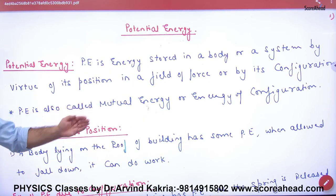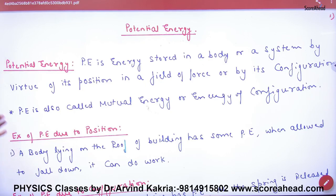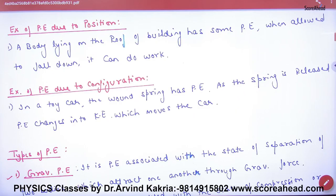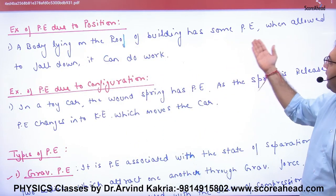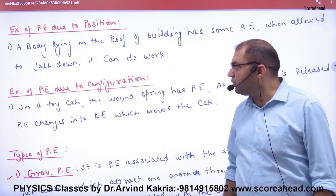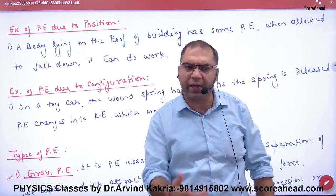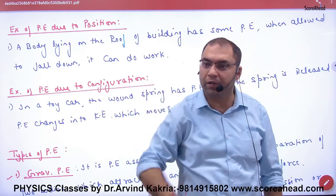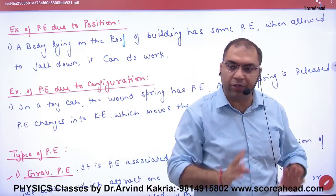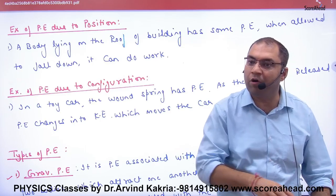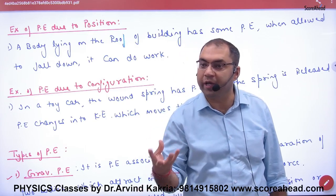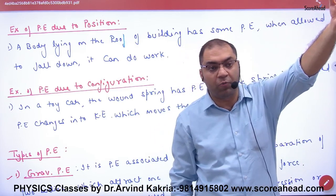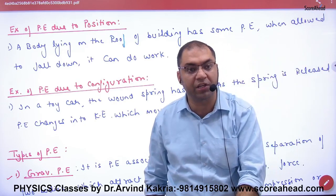Potential energy is also called mutual energy or energy of configuration. Example of potential energy due to position: a body lying on the roof of a building has potential energy. When allowed to fall down, it can do work. The work done is stored energy, and it is released in the form of kinetic energy.